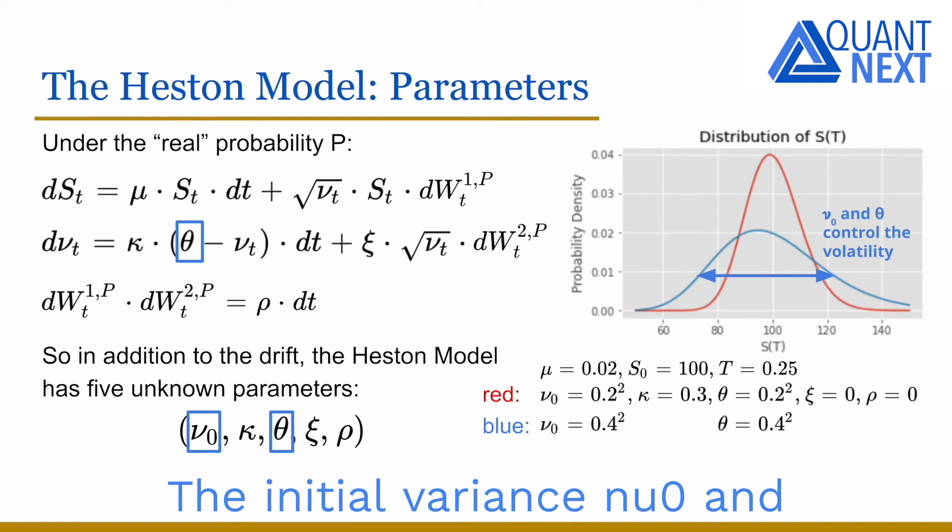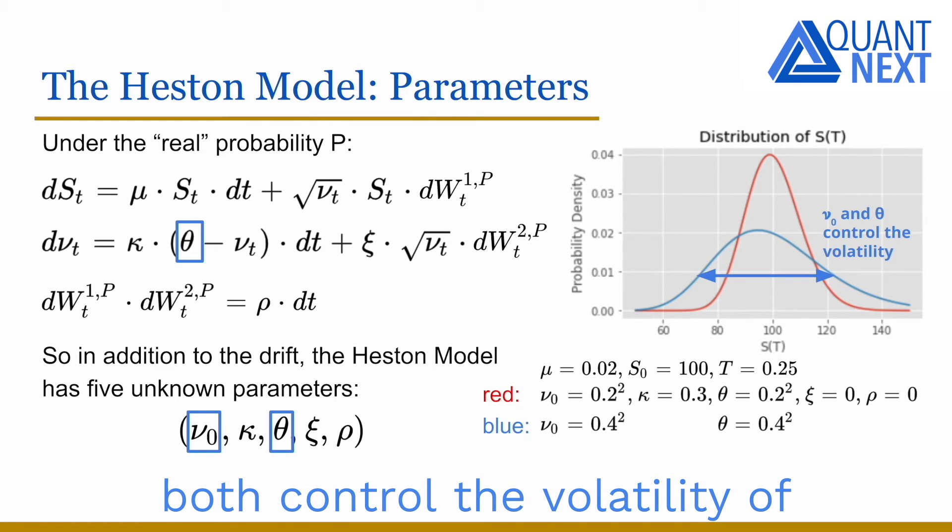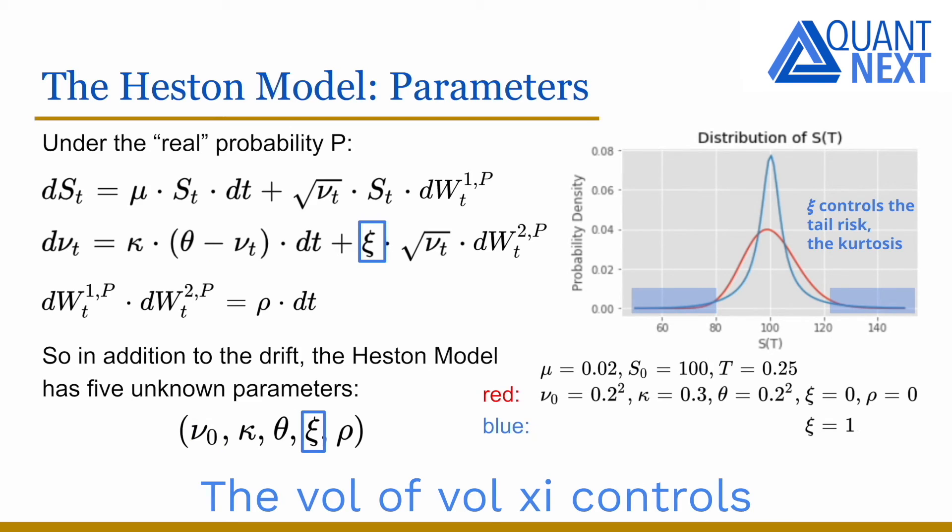The initial variance Nu0 and the long-term variance theta both control the volatility of the asset price return. The vol of vol Xi controls the tail risk, the kurtosis of the distribution. A higher vol of vol will increase the probability to have extreme movements on both sides. The distribution is no more Gaussian; it has fatter tails.